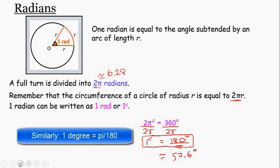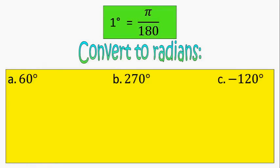So if we want to convert from degrees to radians, we need to use the fact that one degree is equal to π over 180. So in order to go from degrees to radians, all I need to do is multiply my degrees by π over 180.